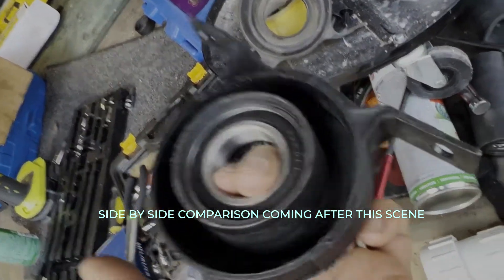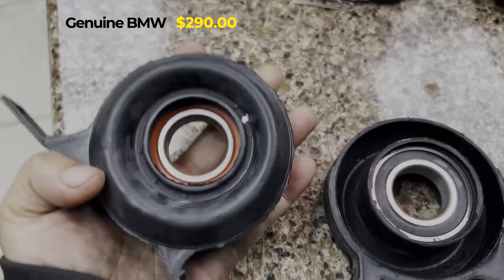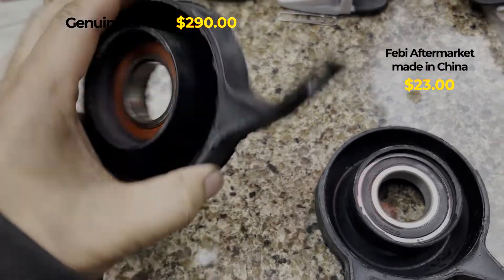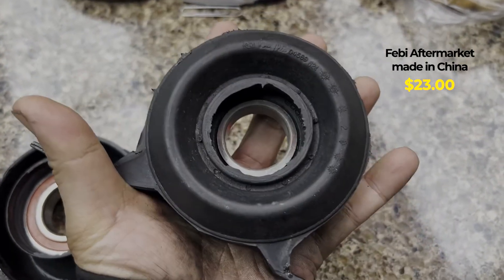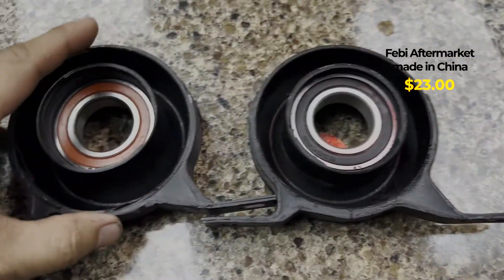The OEM BMW center bearing for the driveshaft versus the Fabie aftermarket unit. There is definitely a difference.